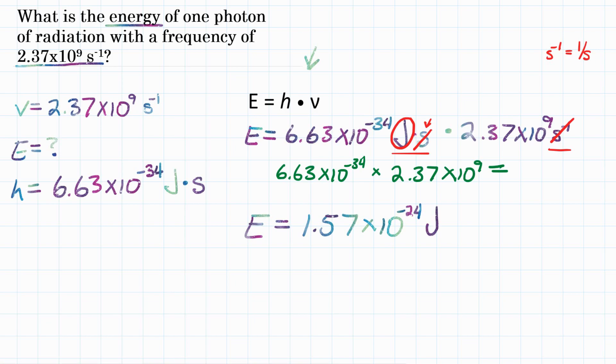And our units are joules. So final answer: What is the energy of a photon with a frequency of 2.37 times 10 to the 9th seconds to negative 1 power? That would be 1.57 times 10 to the negative 24th joules.